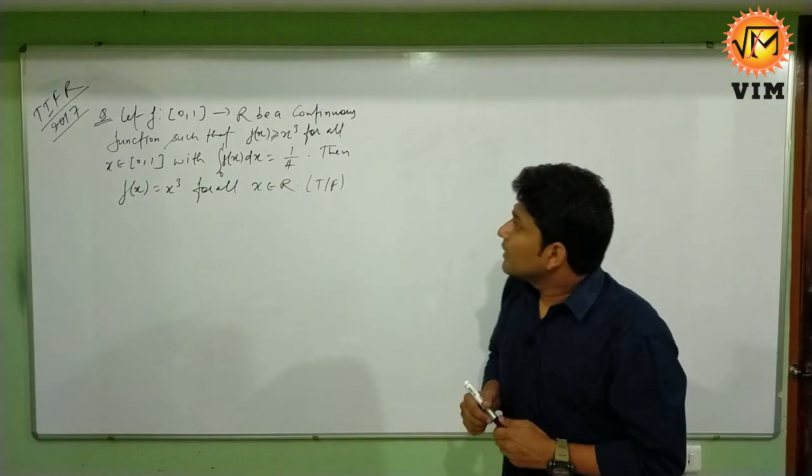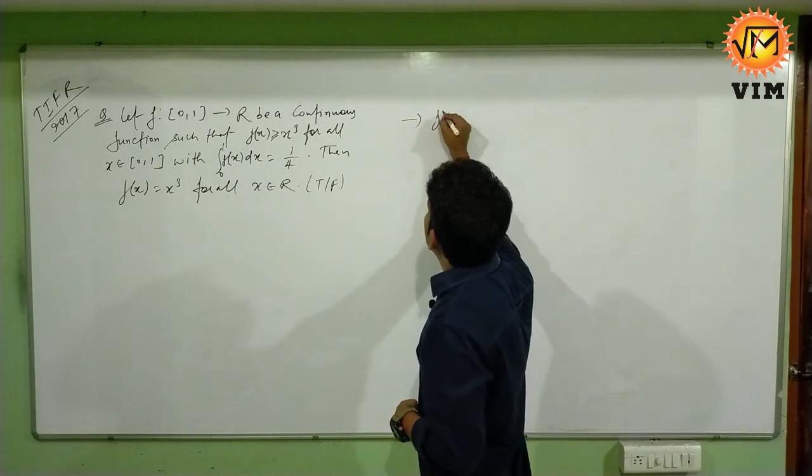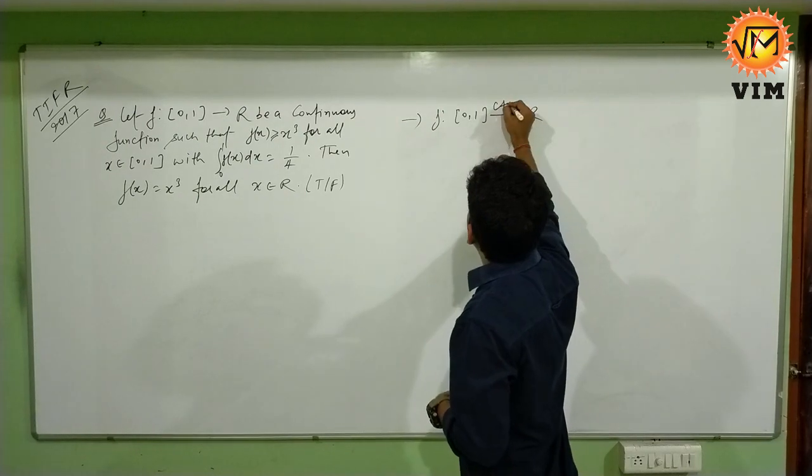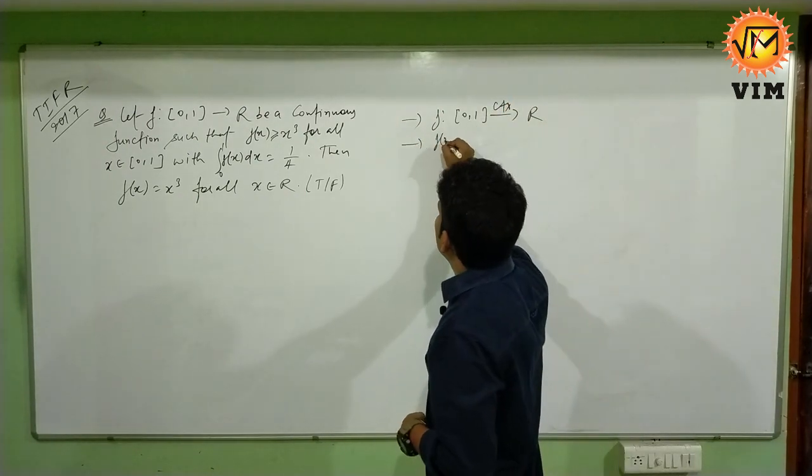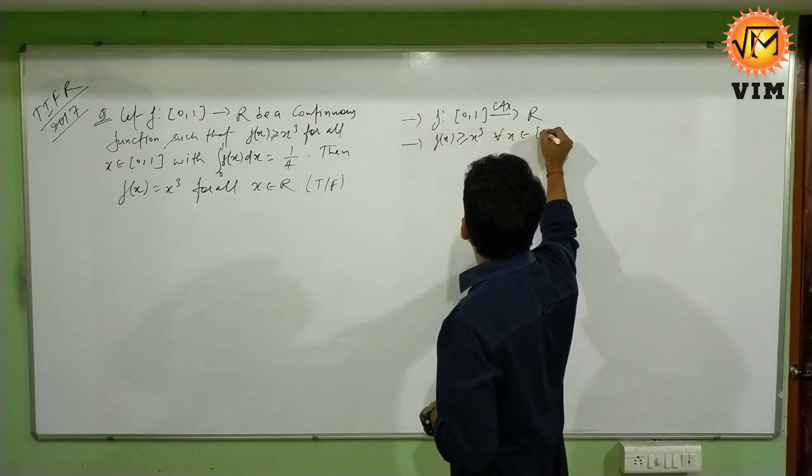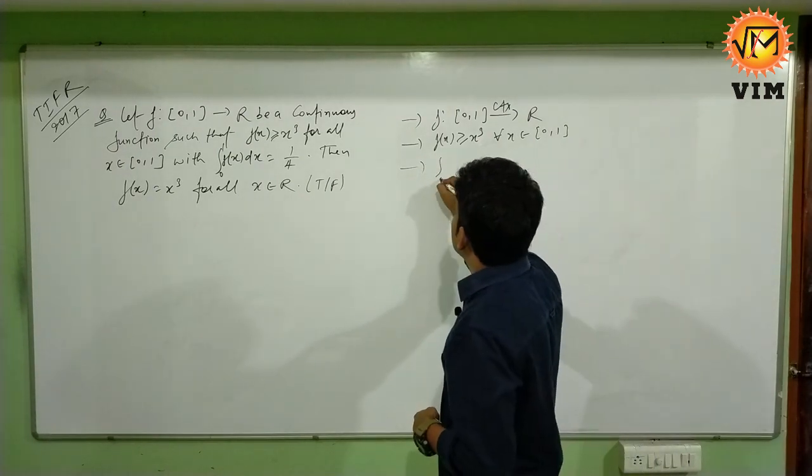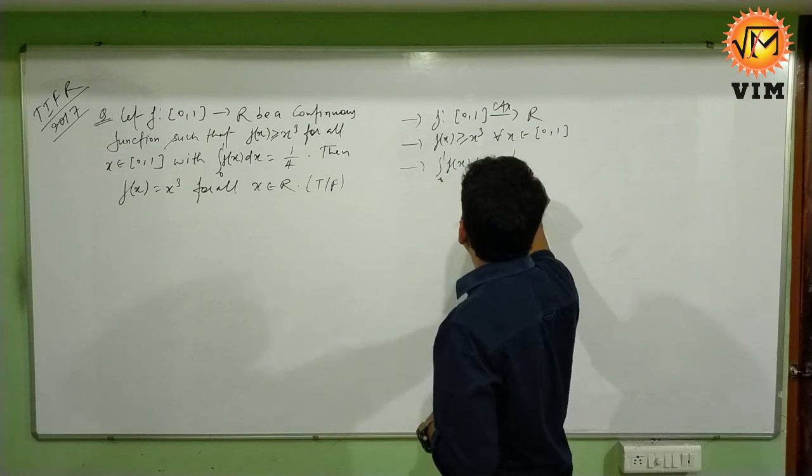So firstly, extract the given information in the question. The first information is f is a continuous function from [0,1] to R. The second information is f(x) ≥ x³ for all x ∈ [0,1]. And the third information is ∫₀¹ f(x)dx equals 1/4.